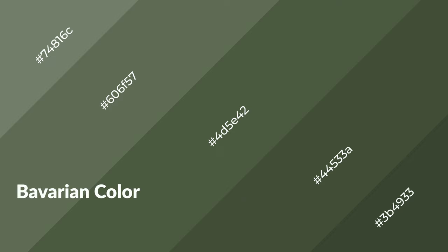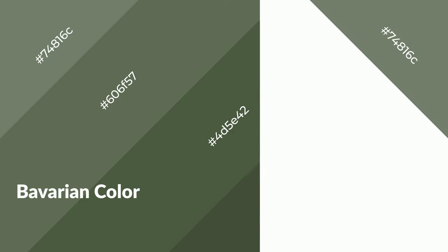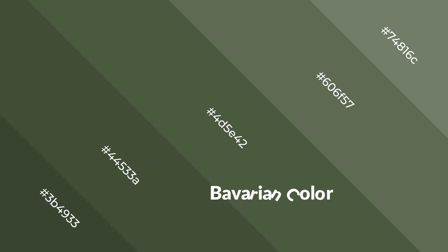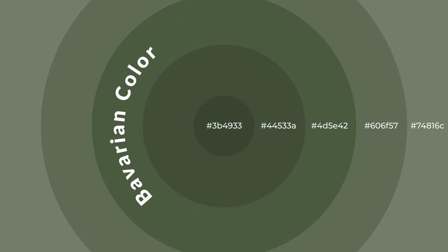Bavarian is a cool color and it emits calming, serene, soothing, refreshing, spacious, unwinding, peaceful, and relaxed emotions. Cool colors are like water, ice, sky, grass, soft, and snow. You can see them used in baby products.